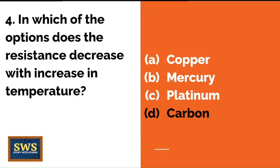In which of the options does the resistance decrease with increase in temperature? Copper, mercury, platinum, or carbon? The correct option is D — carbon.